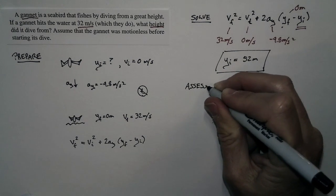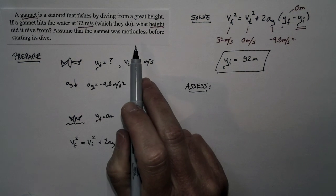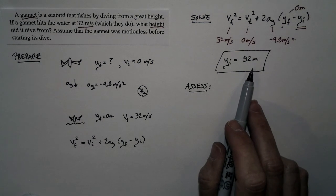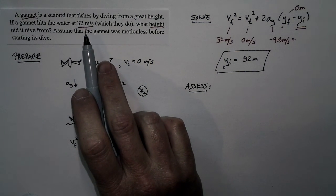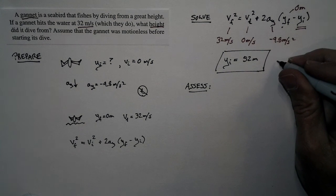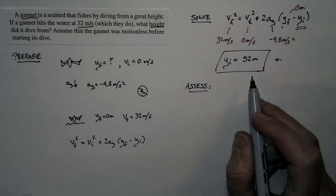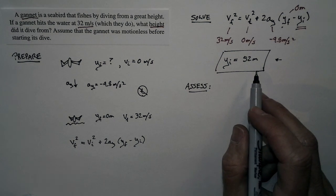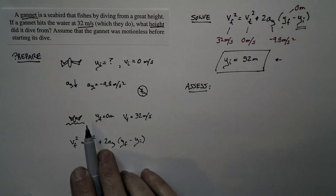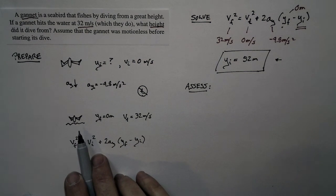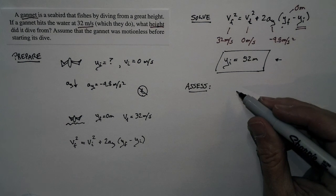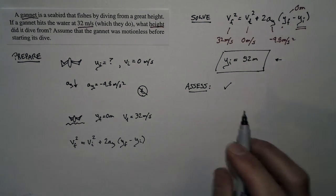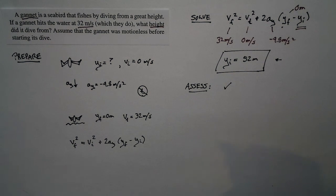Let's do a quick assessment. We said at the start that we expected the height to be quite a bit more than 15 meters because I drop things from 15 meters all the time and they don't get moving this fast. So our result seems reasonable. This is 52 meters, so it's a bit more than 50 yards, half a football field. That's a pretty great height. And when something falls from that great height, it's going to be moving pretty quickly. So our final result is that the gannet dives from a great height, it hits the water at a high speed, and our final result matches our understanding of the way the world works.